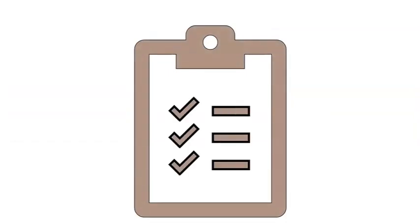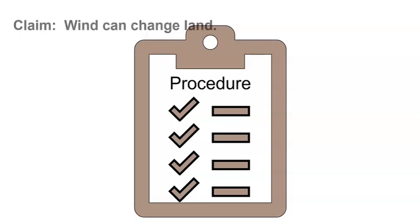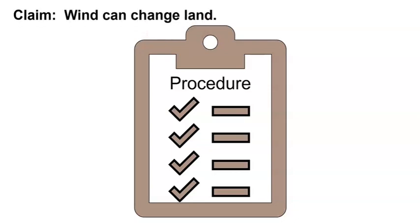Before we start, we need to make a step-by-step plan for our investigation. We call this plan a procedure. Why do you think it is important for us to develop a procedure before we begin an investigation? Well, we need to know how to use the materials to help us find evidence to support our claim. Wind can change land.